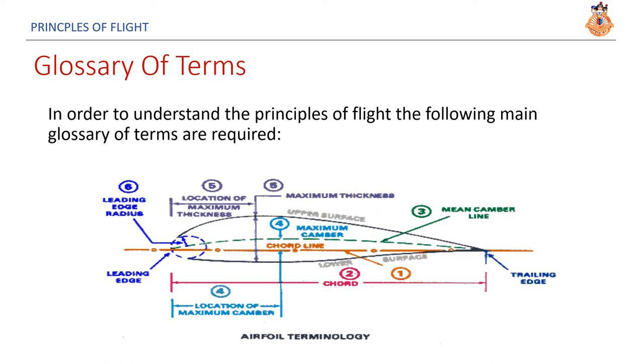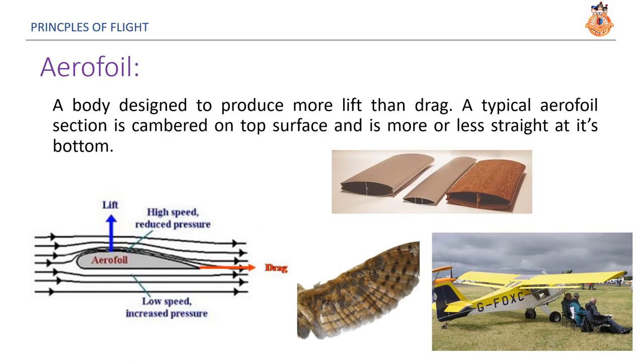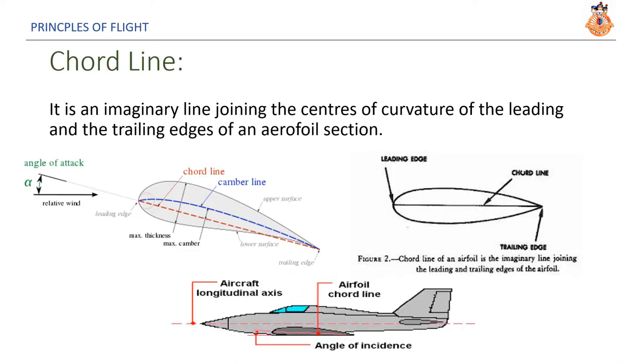We have come to an end to all these definitions. Now, let us learn a few glossary of terms about the aircraft. In order to understand the principles of flight, the following main glossary of terms are required. Aerofoil. An aerofoil is a body designed to produce more lift than drag. A typical aerofoil section is cambered on its top surface and is more or less straight at its bottom. Cord line. It is an imaginary line joining the centers of curvature of the leading and the trailing edges of an aerofoil section. The leading edge of an aerofoil is the one facing the nose of an aircraft and the trailing edge of an aerofoil is the one facing the tail of an aircraft.